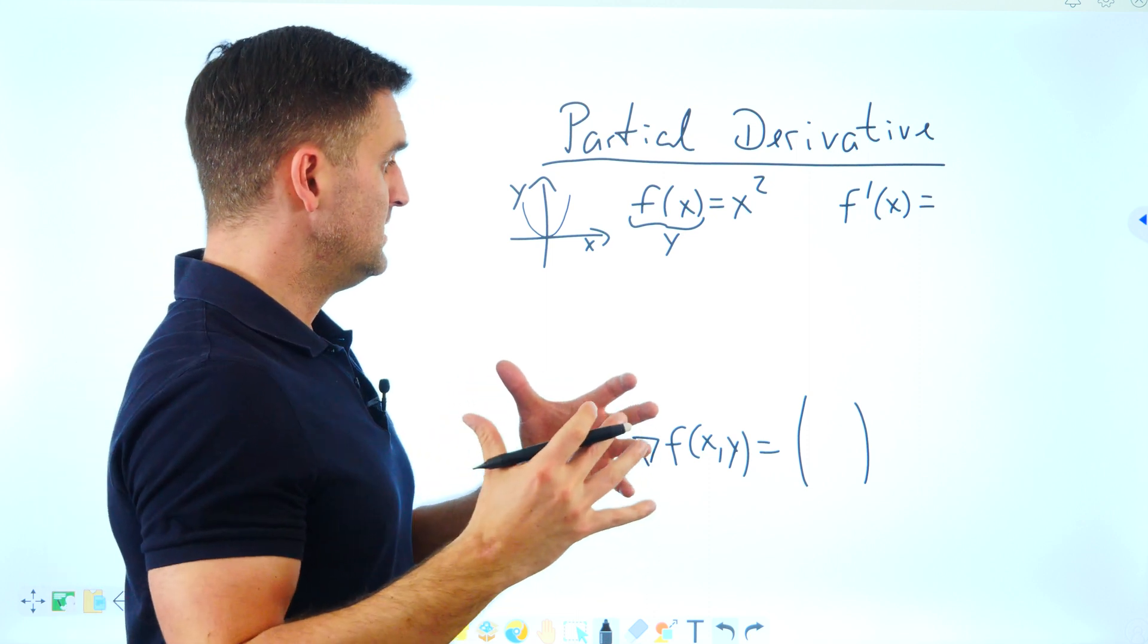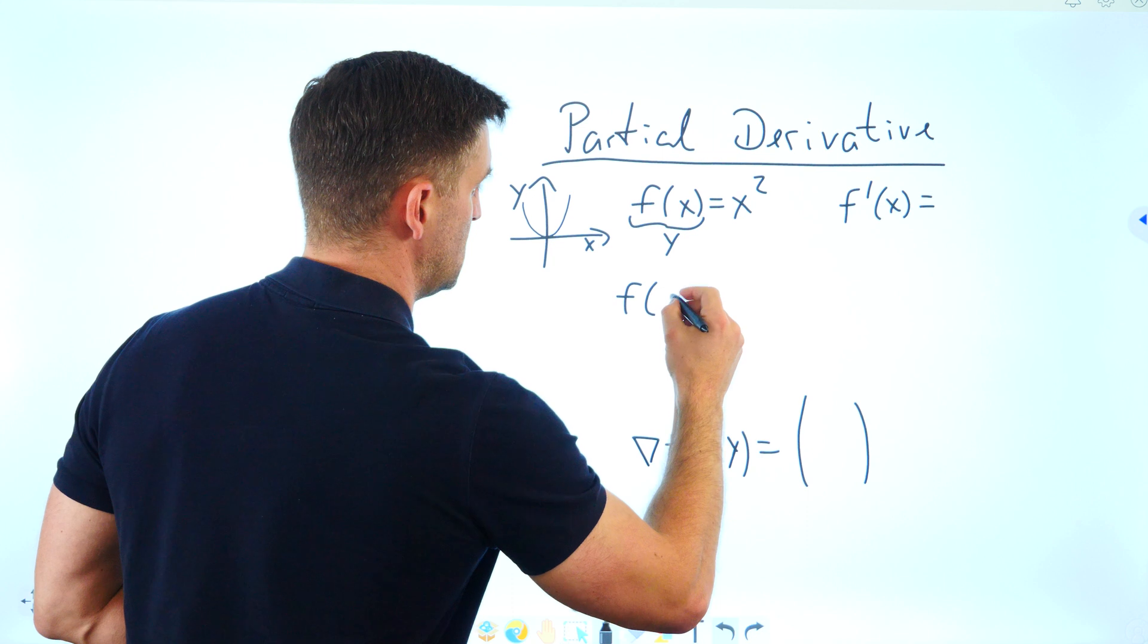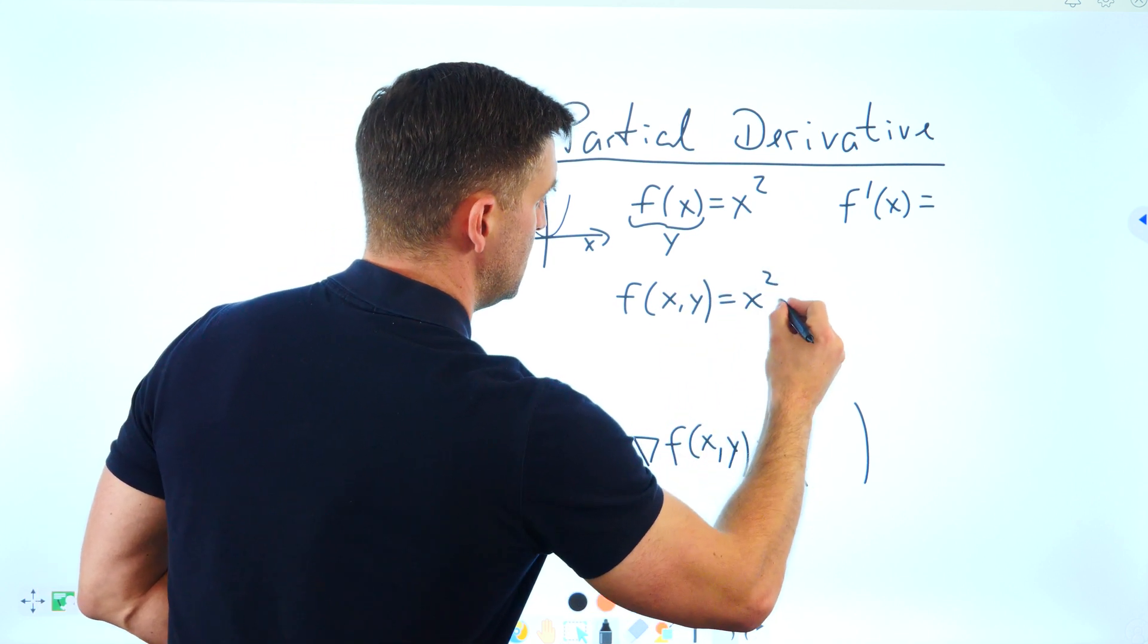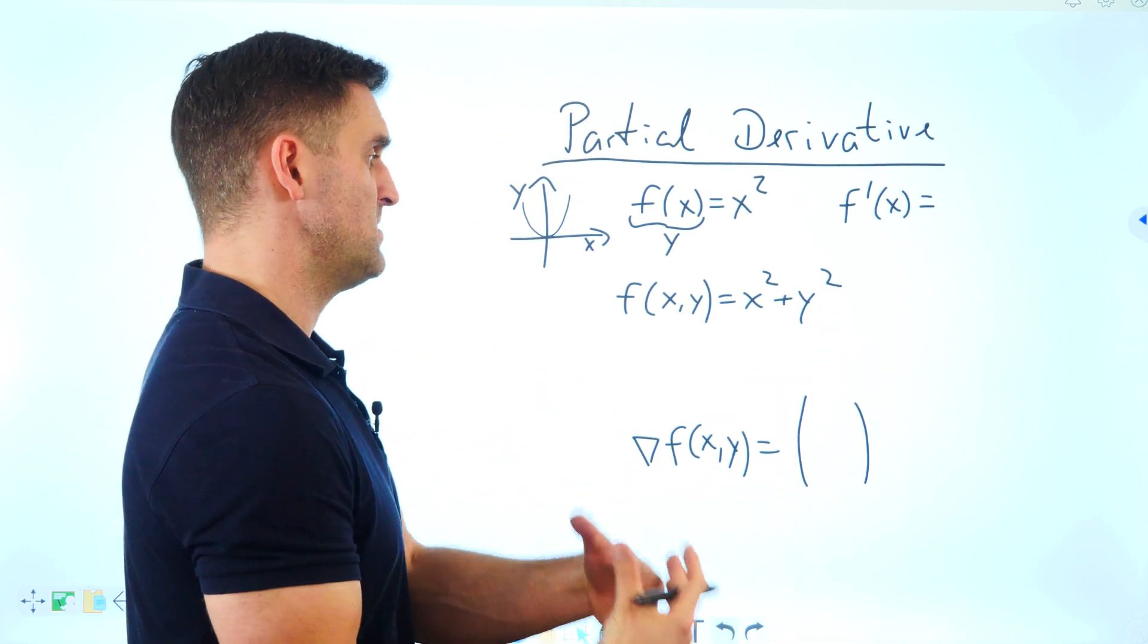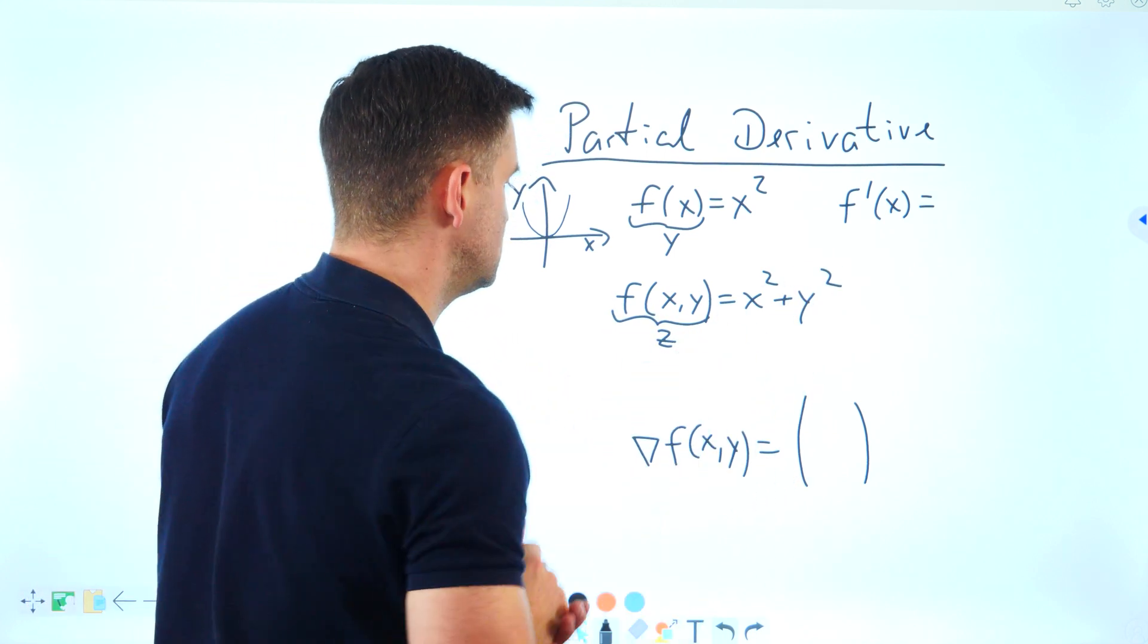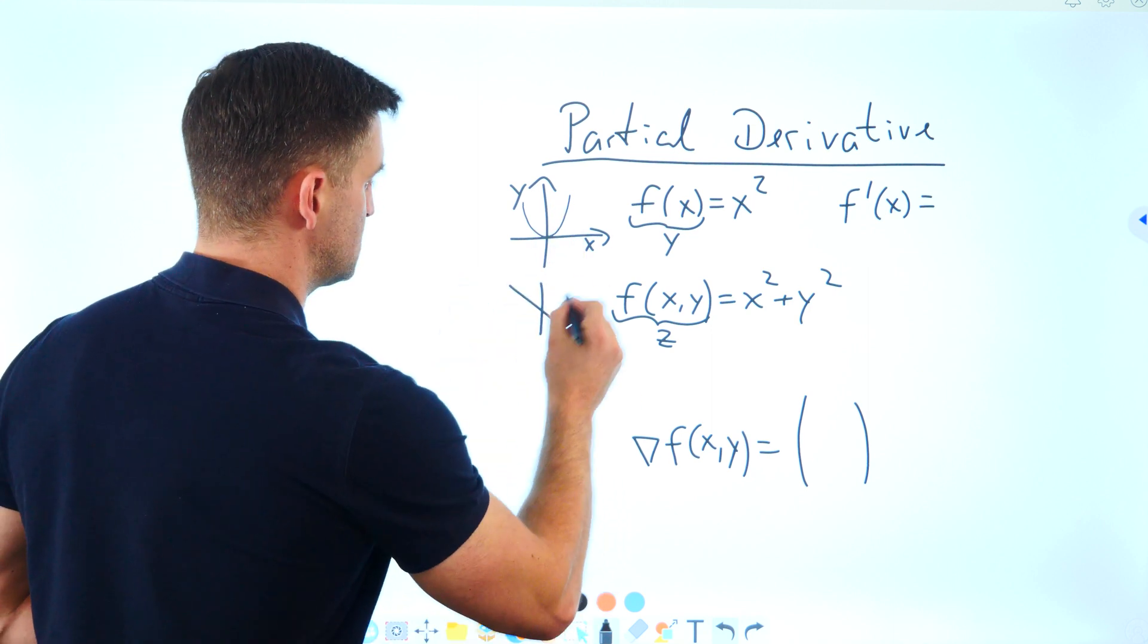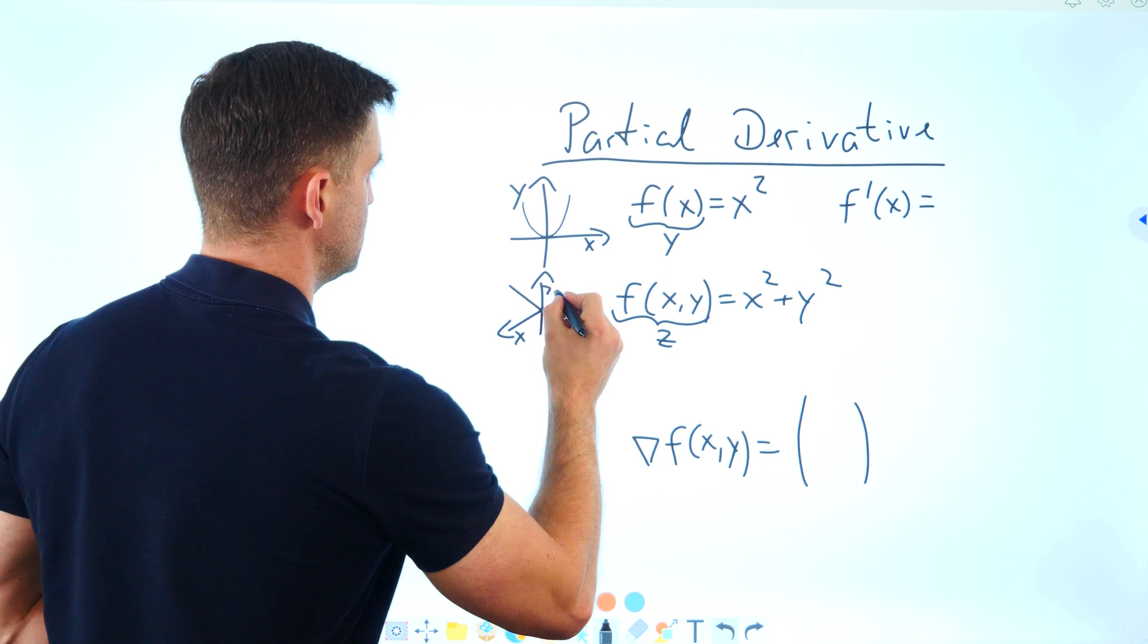But now you get a new function like f(x,y), for example, and you now put in some x and y and the outcome would be z. So you're no longer in two dimensions but in this case, three dimensions with x, y, and z.